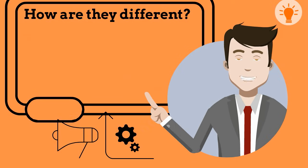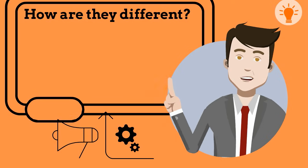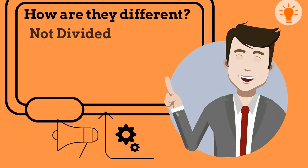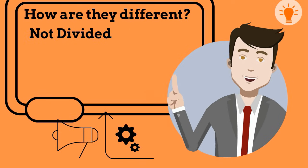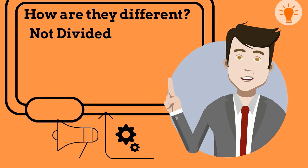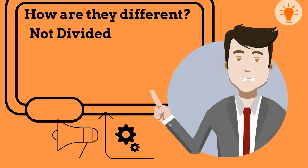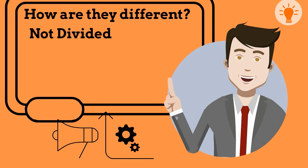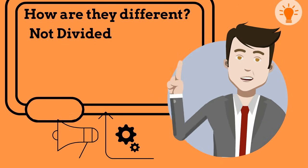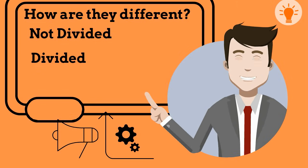Discrete data cannot be divided. It is distinct and can only occur in certain values. Continuous data can be divided infinitely.